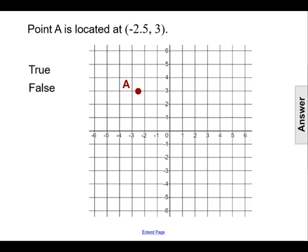Point A is located at negative two point five comma three. True or false? The best way to see if this statement is true or false is to actually find the coordinates of point A and then compare them to the statement given.